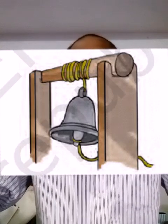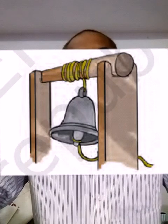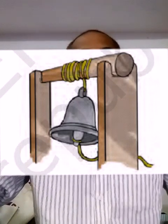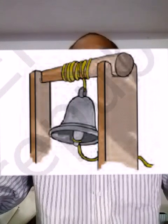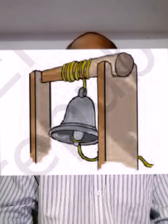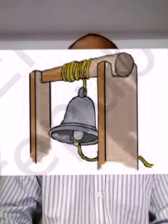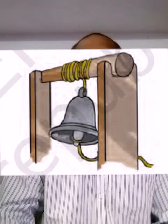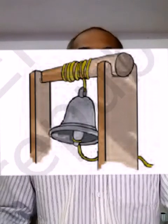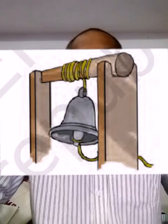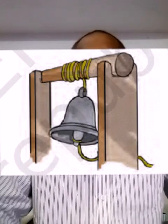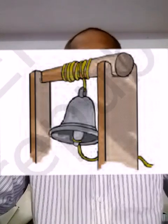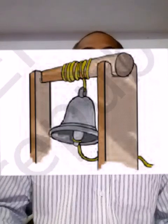Now we need to understand that some objects can have two types of motion at the same time. For example, when you throw a ball on the ground, the ball rotates on its own axis and also moves forward on the ground — that is rectilinear motion. Similarly, when you ride a bicycle, the wheel rotates on its own axis and also moves forward.